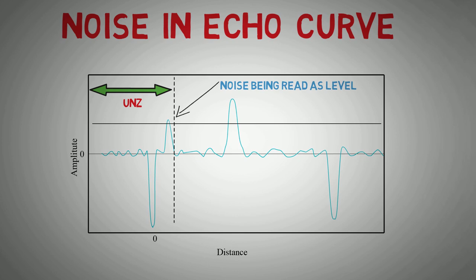It's worth mentioning that if the product level can get as high as the upper null zone in normal process conditions, then this level will be ignored over the point it meets the upper null zone.